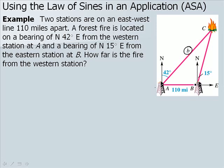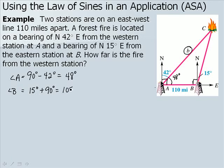First, we need to figure out all the angles in our triangle. We have a right angle in both cases. Angle A is equal to 90 degrees minus 42 degrees, which is 48 degrees. Angle B is 15 degrees plus 90 degrees, giving 105 degrees for angle B. To find angle C, we take 180 degrees minus angle A minus angle B, giving a value for angle C of 27 degrees.